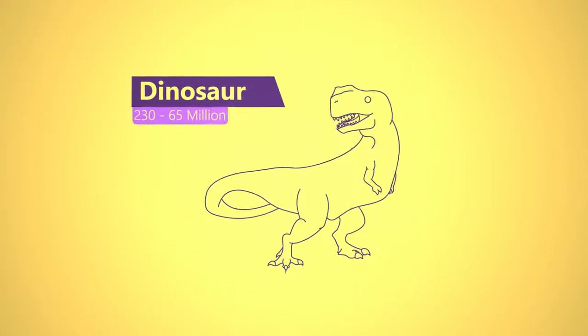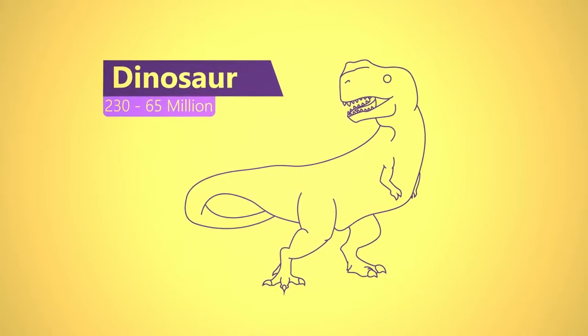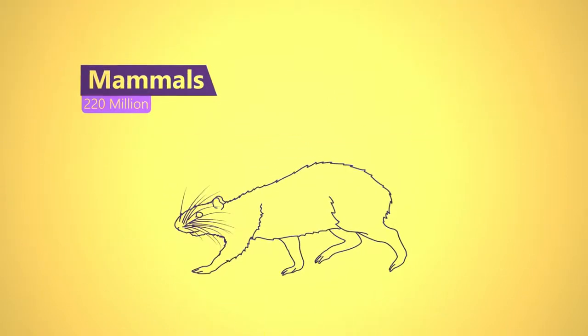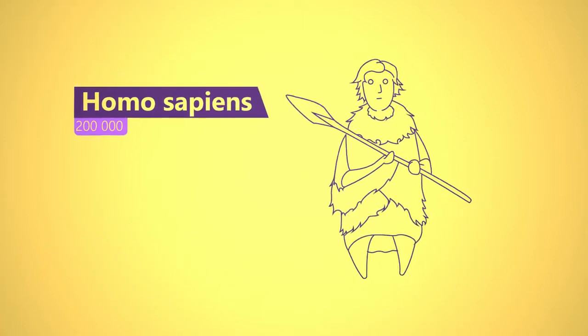Dinosaurs were around between 230 and 65 million years ago. The first mammals started appearing about 220 million years ago, and only in the last 200,000 years did we Homo sapiens appear.